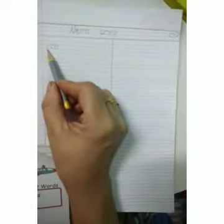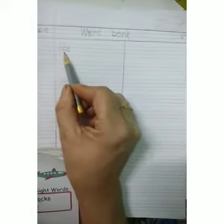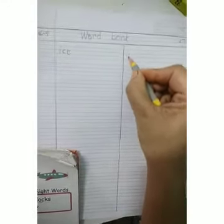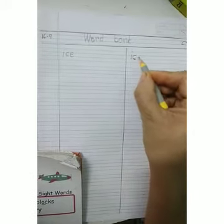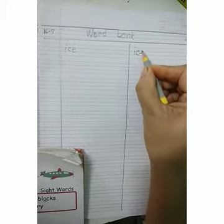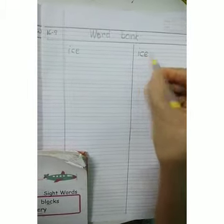First word is I, C, E — ice. Write two times. I, C, E — ice.